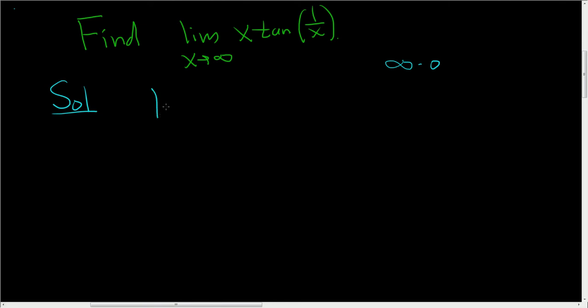So to do that, we have the limit as x approaches infinity. And we can write x as follows. We can write this as the tangent of 1 over x over 1 over x. And just convince yourself this is the same thing.